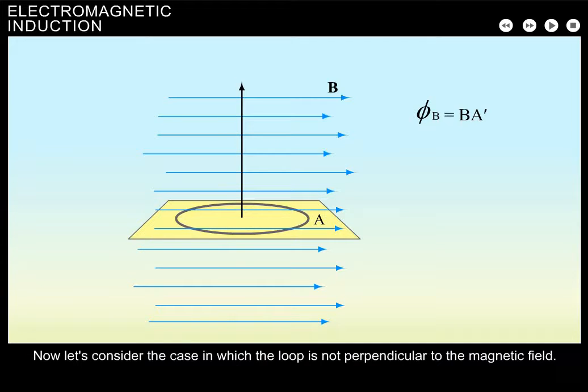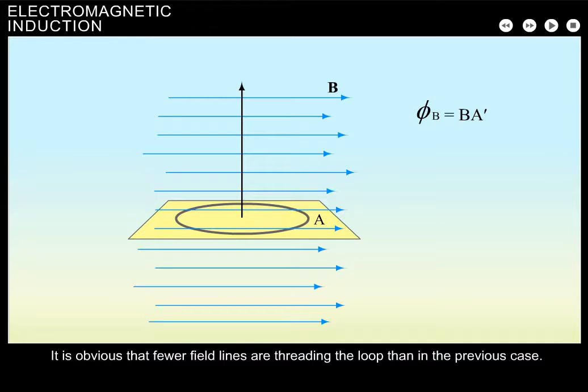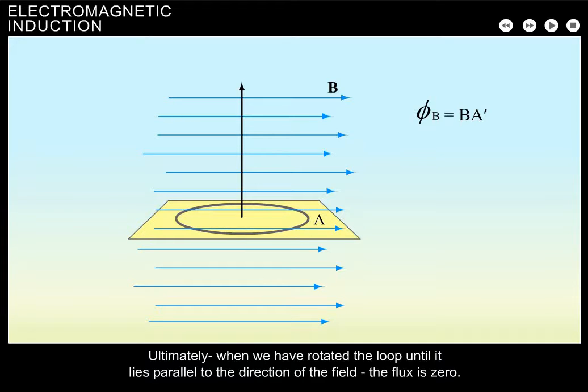Now let's consider the case in which the loop is not perpendicular to the magnetic field. It is obvious that fewer field lines are threading the loop than in the previous case. The magnetic flux through the loop decreases as we rotate the loop. Ultimately, when we have rotated the loop until it lies parallel to the direction of the field, the flux is zero.